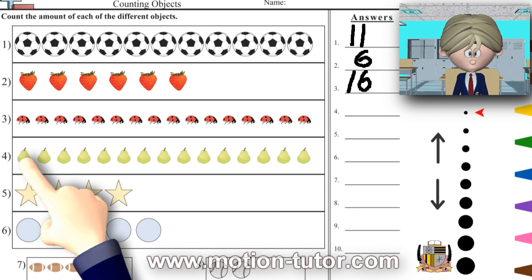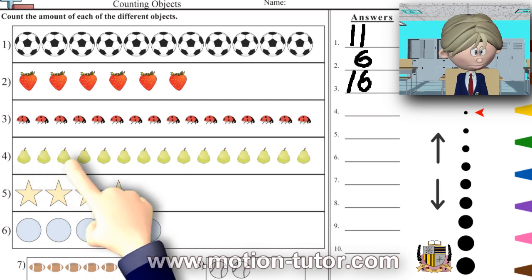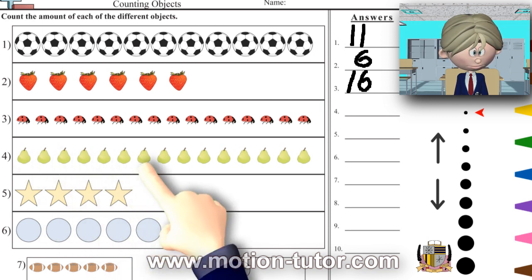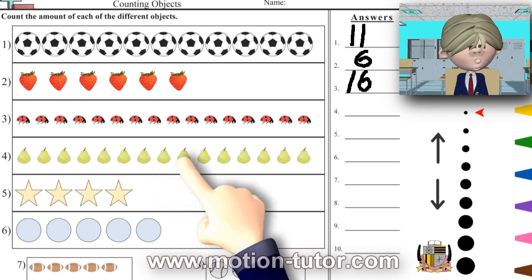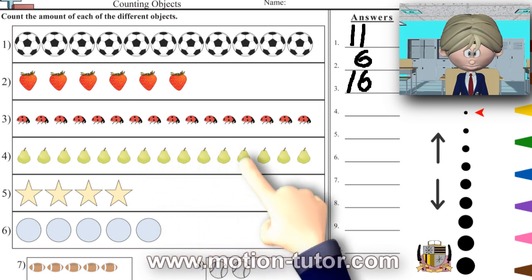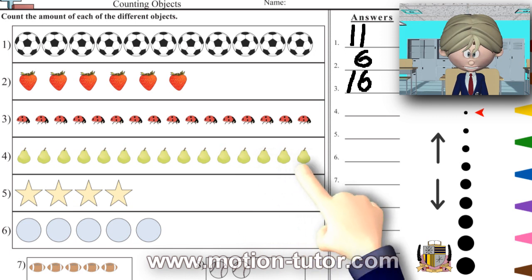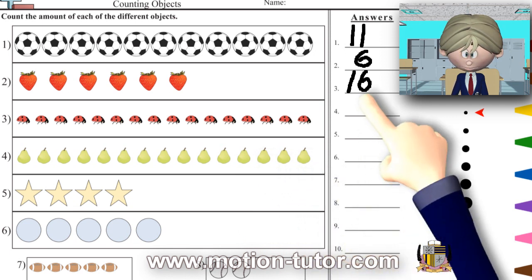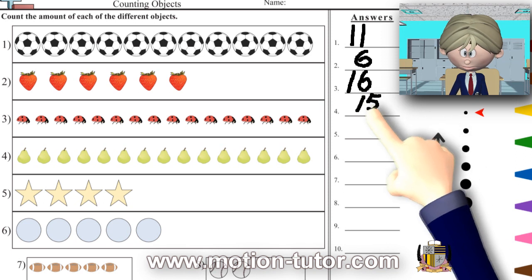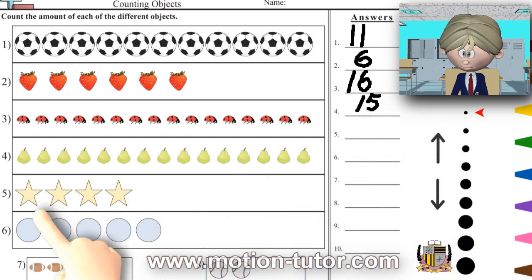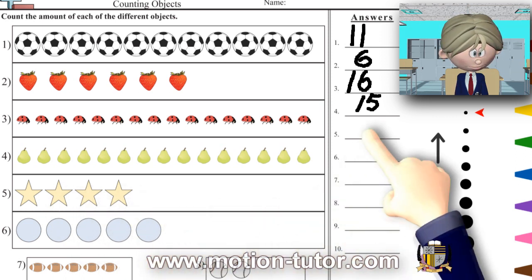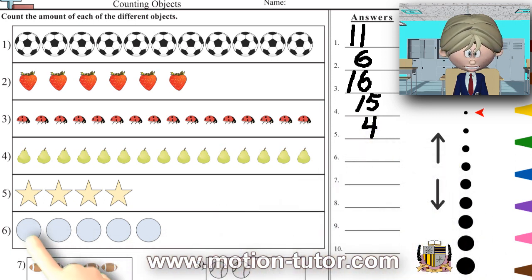For these pears: one, two, three, four, five, six, seven, eight, nine, ten, eleven, twelve, thirteen, fourteen, fifteen. Fifteen pears. The stars: one, two, three, four stars. The circles: one, two, three, four, five circles.